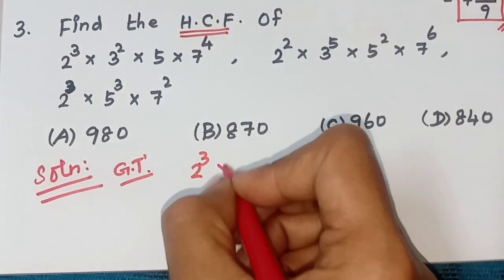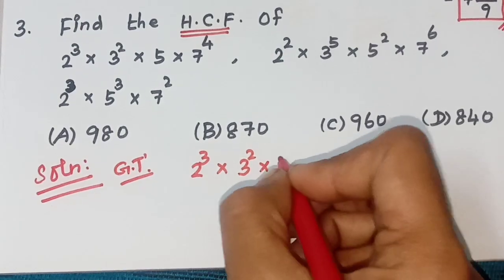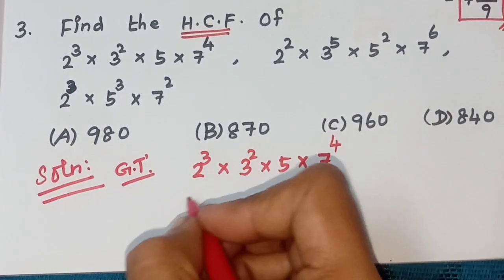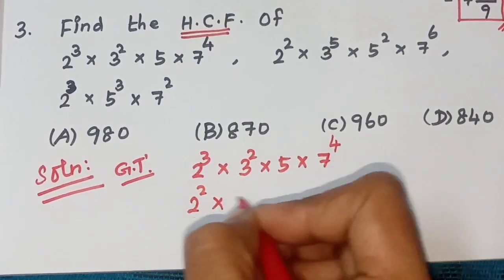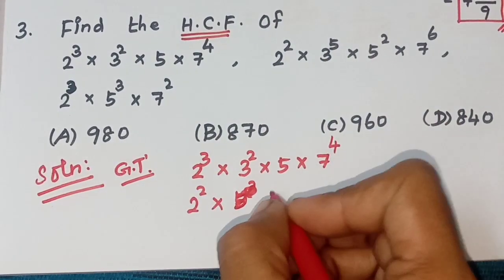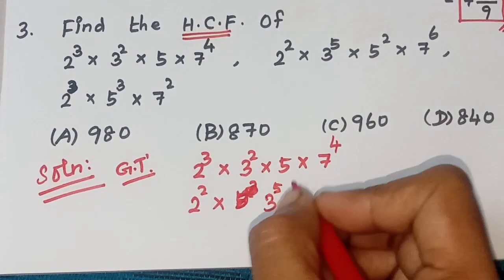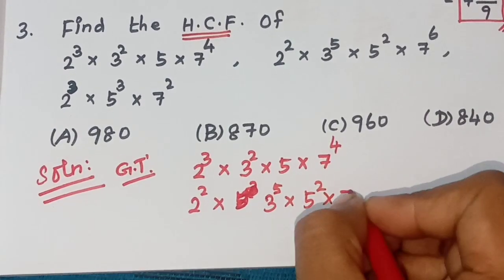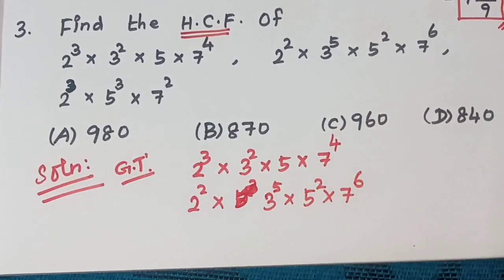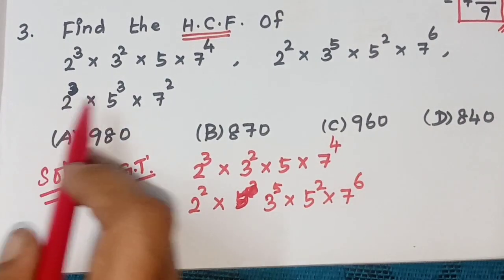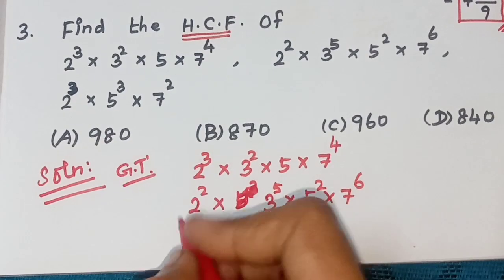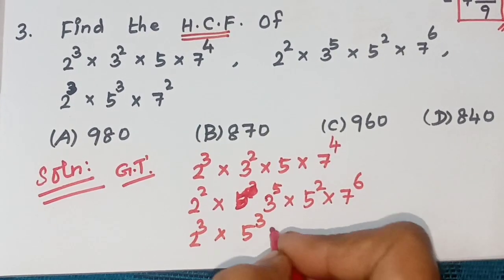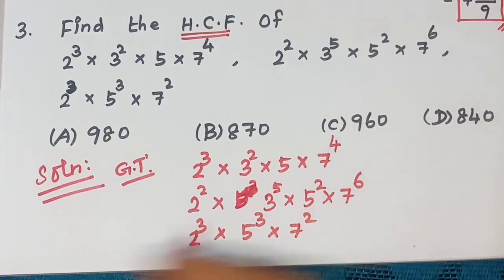Given: First number = 2³ × 3² × 5 × 7⁴, second = 2² × 3⁵ × 5² × 7⁶, third = 2³ × 5³ × 7².